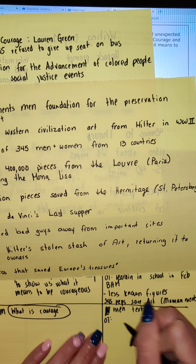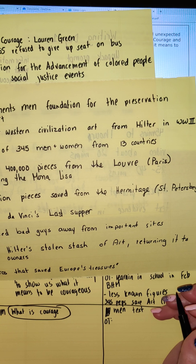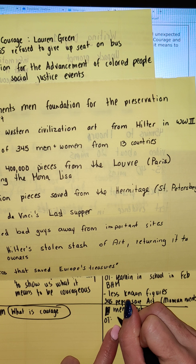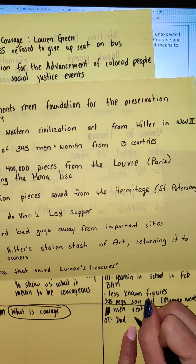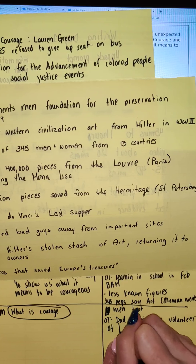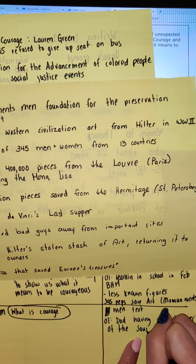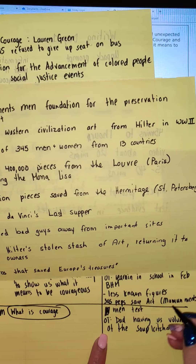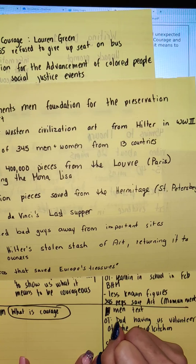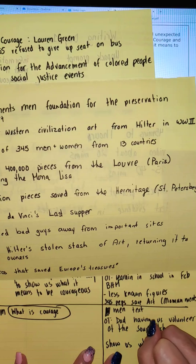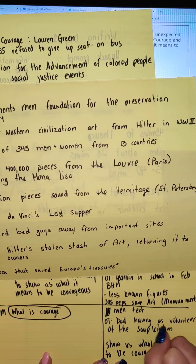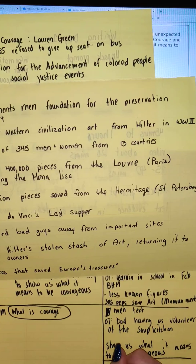And my OT is my dad having us volunteer at the soup kitchen. And then my transition — show us what it means to be courageous. Right there. Okay, so now I'm going into my next section.